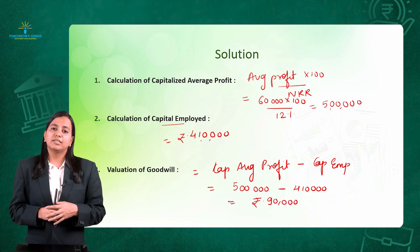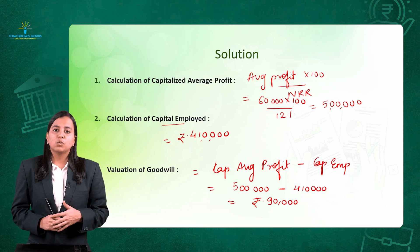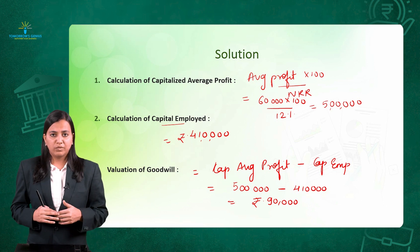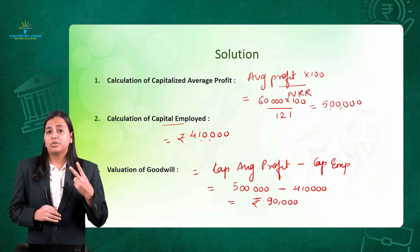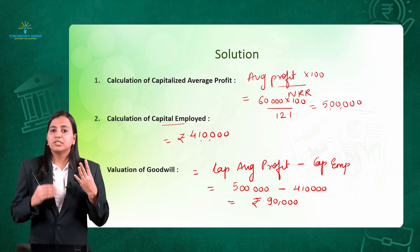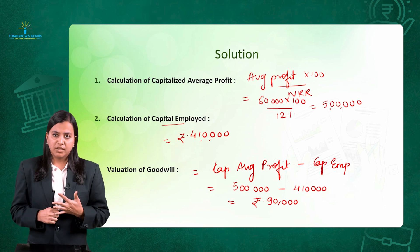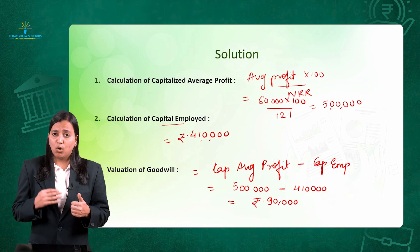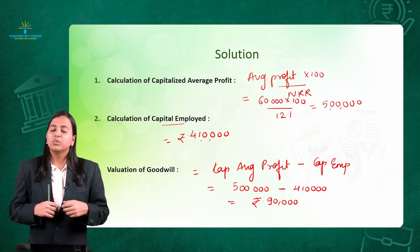We are done with the Capitalization of Average Profit Method — it is very simple! In this video we completed all the methods of valuation of goodwill, starting from the Average Profit Method (video 1), Super Profit Method (video 2), Annuity Method (video 3), Capitalization using Super Profit Method (video 4), and in this video, Capitalization using Average Profit Method. In the next video, I am going to start the accounting treatment of goodwill in the case of admission of a partner. Till then, stay tuned. Thank you.